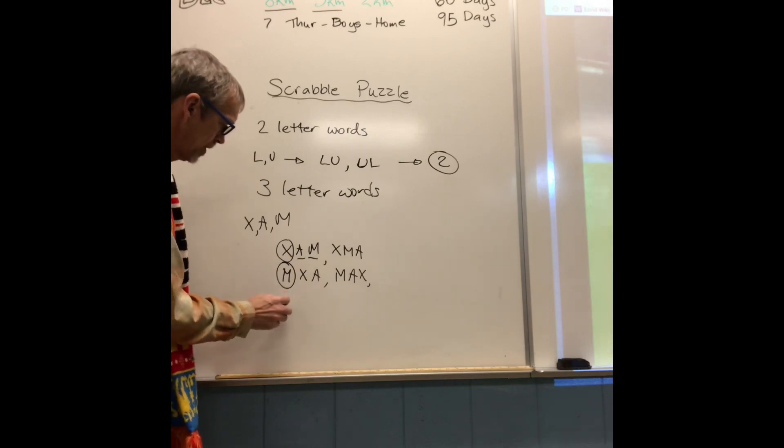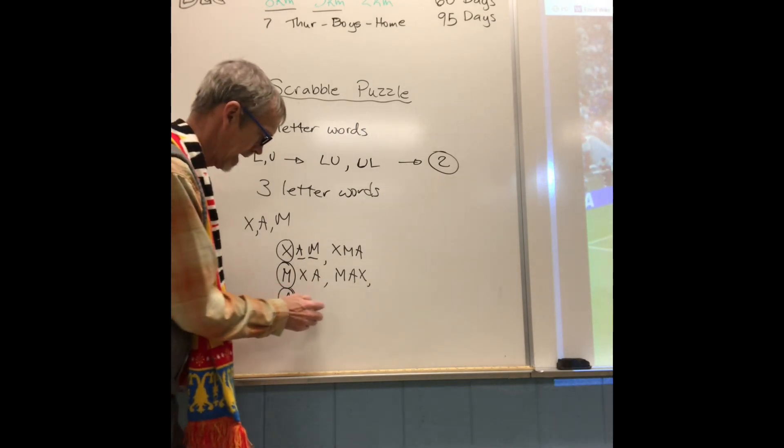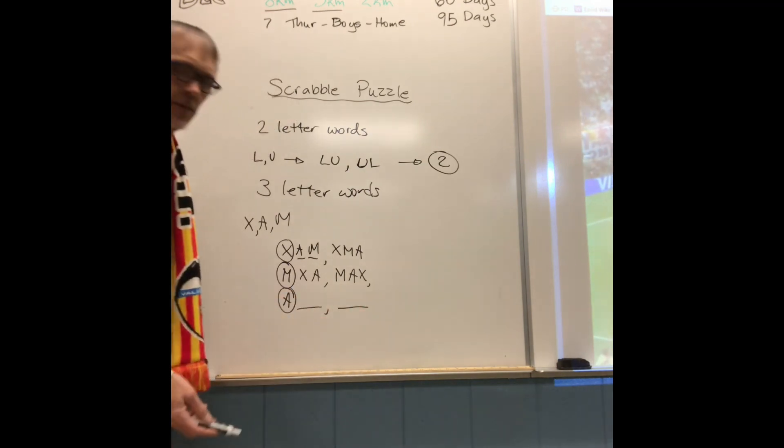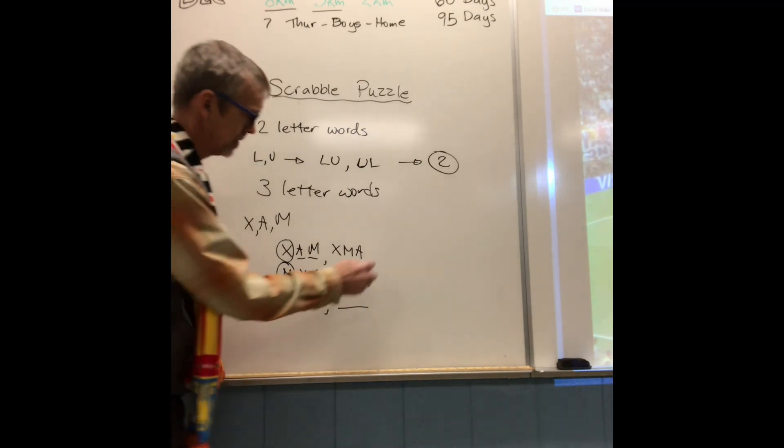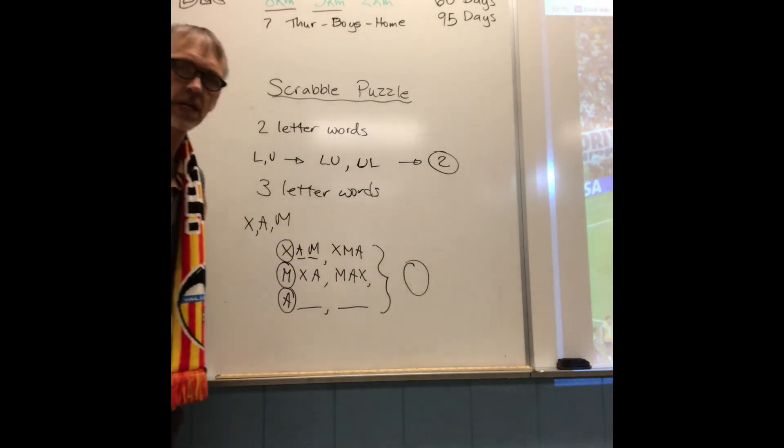And I think it's pretty obvious at this point that my A list will also have two. Go ahead and list them out. But you can see now how many you have. Go ahead and write that number there and then proceed.